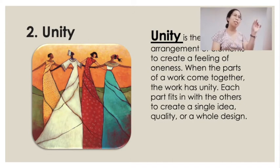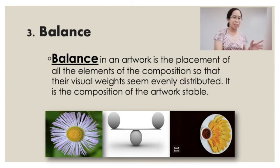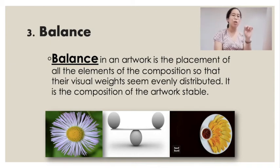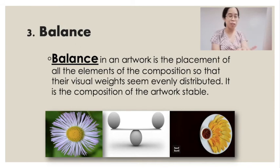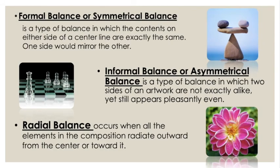When you look at a work of art, you look at the contrast and the unity. Now let's go to balance — the B in CUBE VUMP. Balance in an artwork is the placement of all elements so that their visual weight seems evenly distributed; it stabilizes the composition. Formal or symmetrical balance is a type where the contents on either side of a center are exactly the same — there is symmetry, equal in balance.